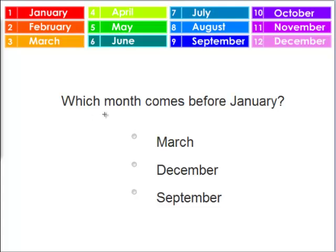Now, do you know which month comes before January? Is it March, December, or September? Well, right before January would then be December. The month of December comes right before January.